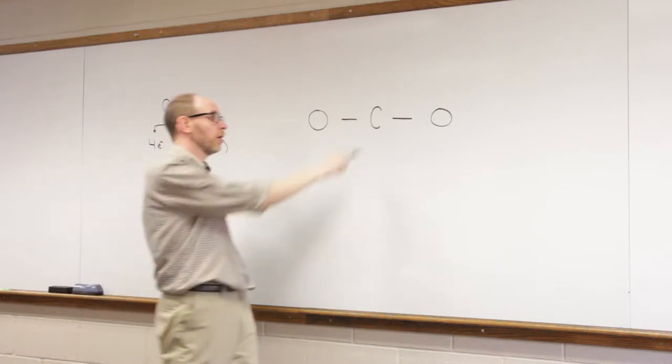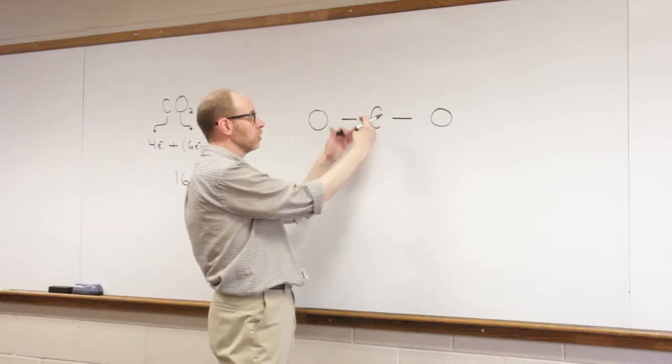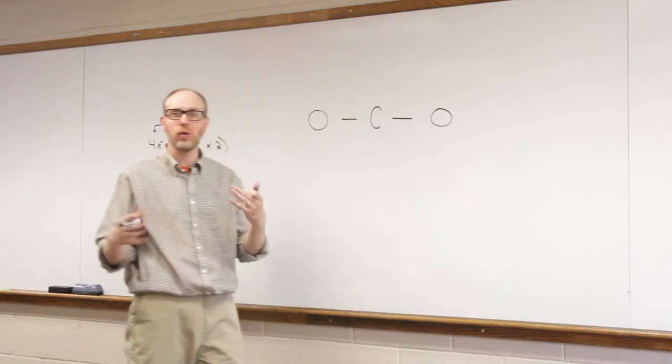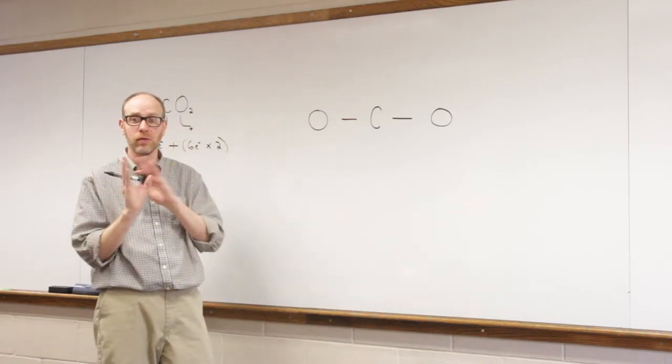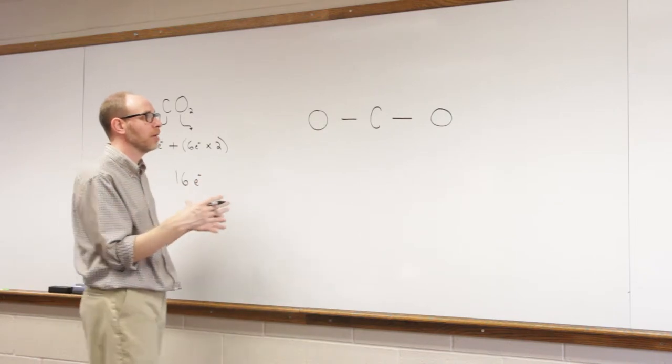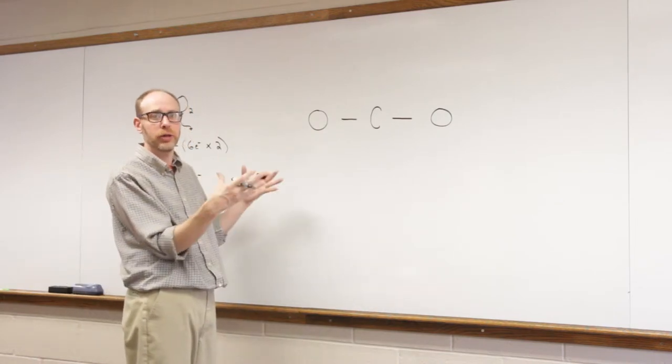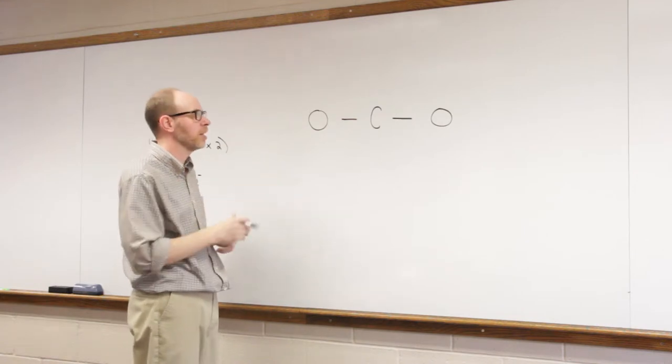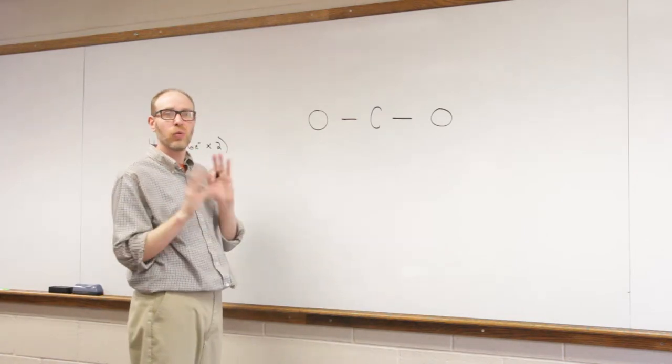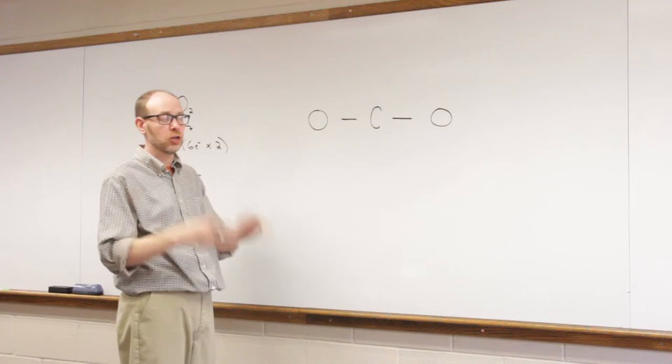You could draw this at a right angle if you wanted to. You could draw it down like this. It's a Lewis structure. We're not determining or inferring any geometry. We may learn a little bit later we're going to know from looking at a Lewis structure what the geometry would be. But for now, we're just trying to get the proper Lewis structure down on paper.